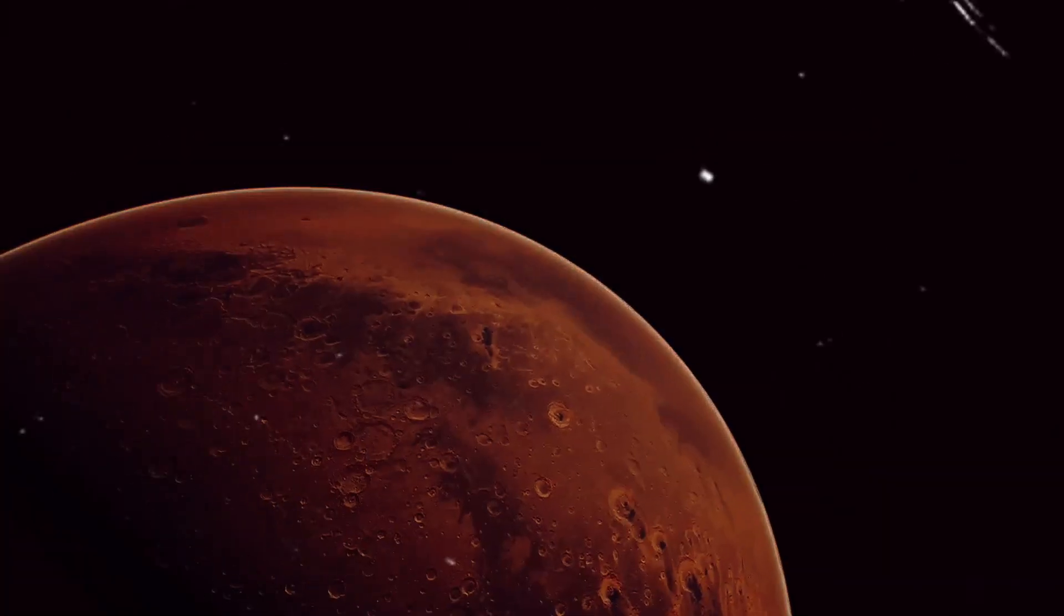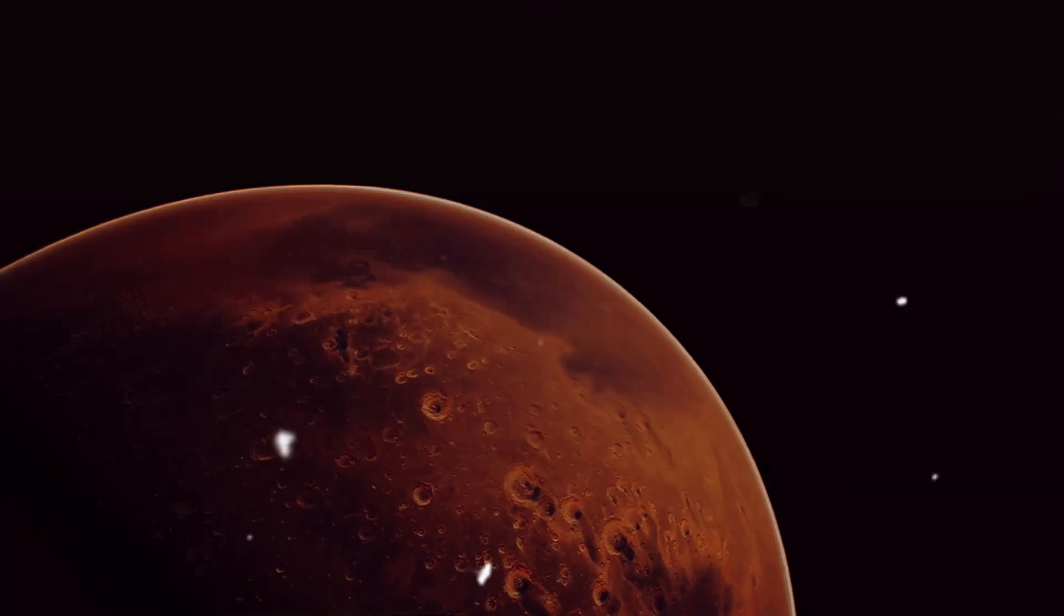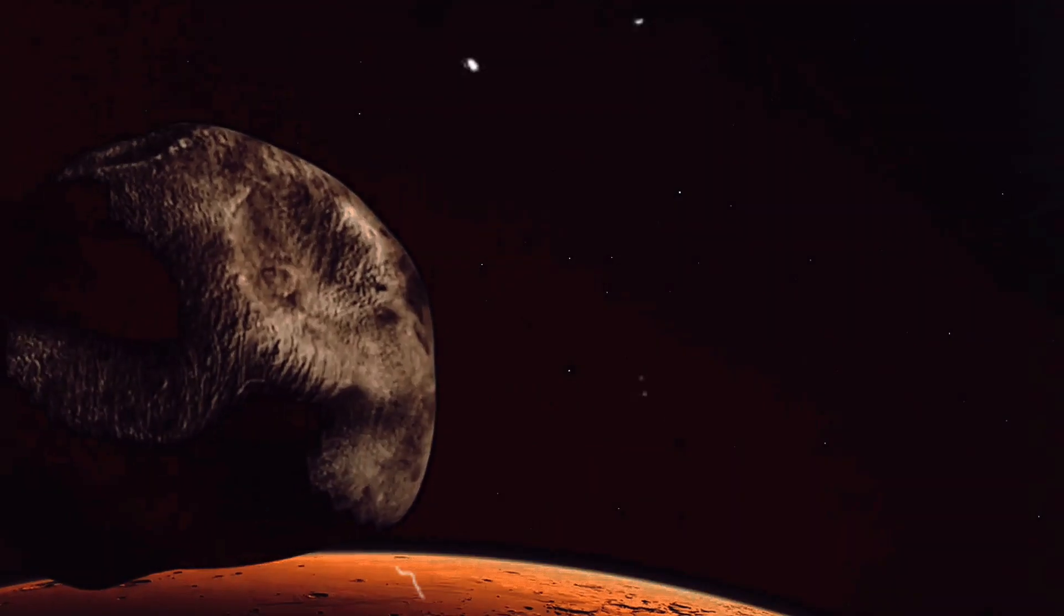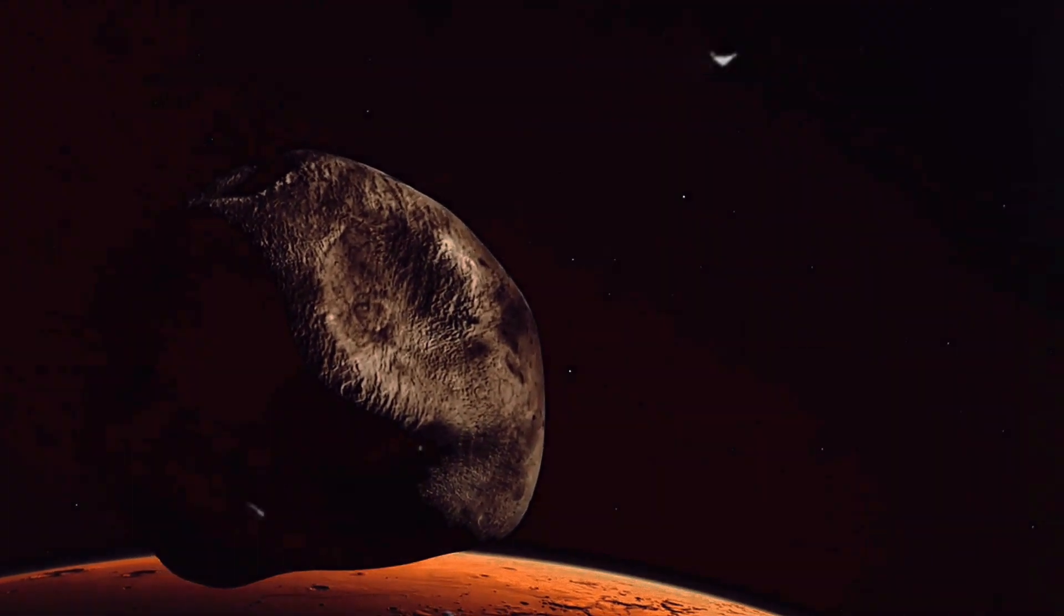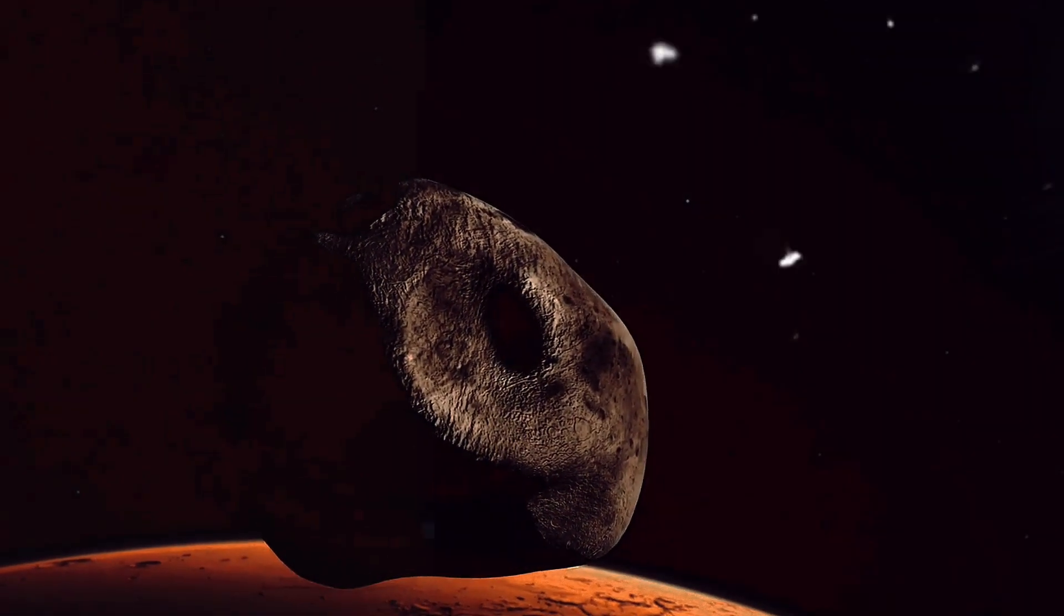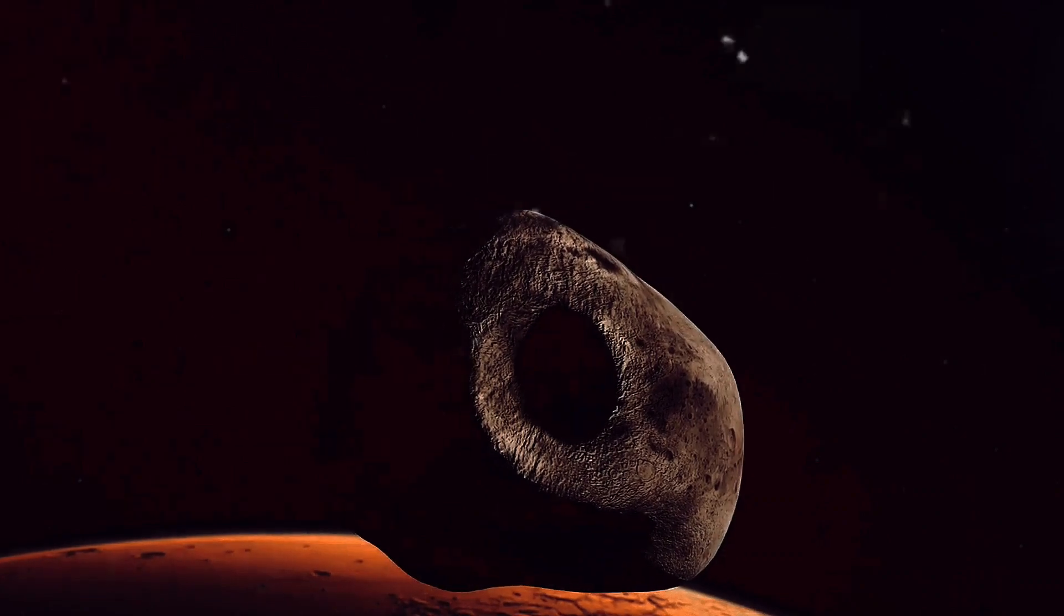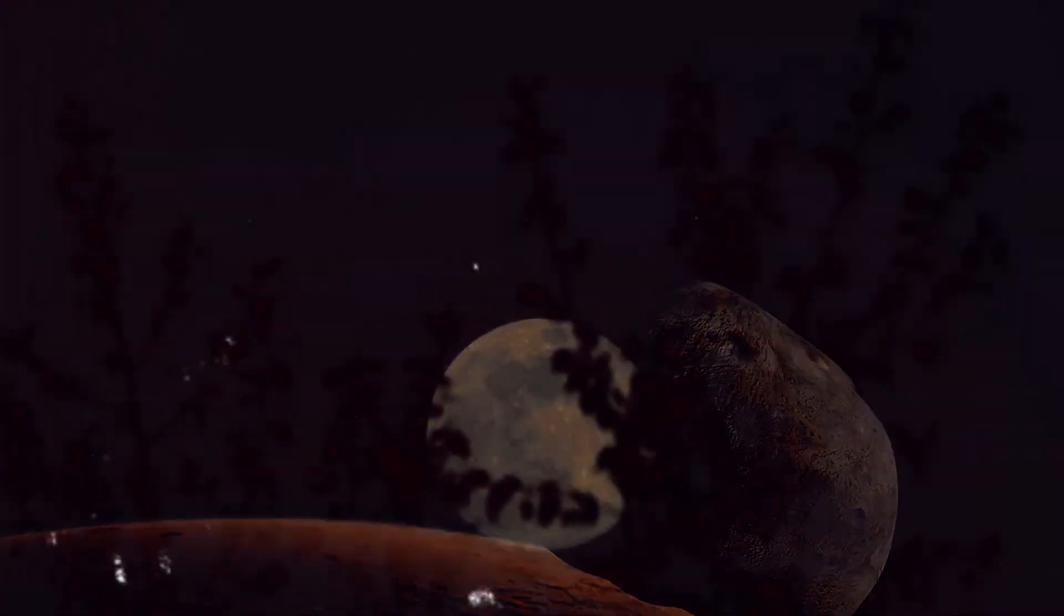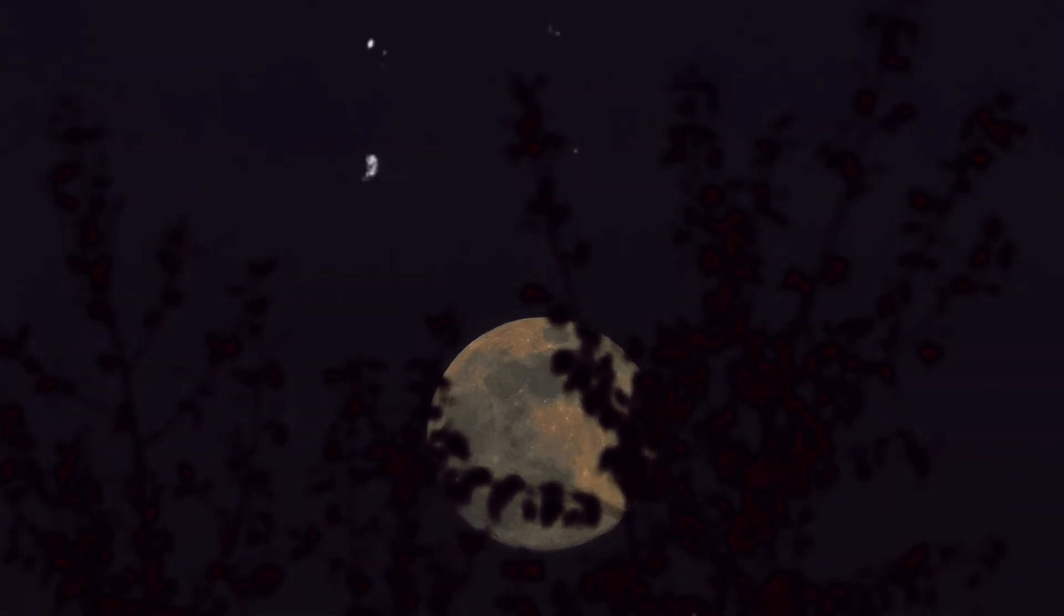the implications of Earth being in Mars' orbit extend beyond our planet. Time, as we understand it, is a construct based on our current position in the solar system. If that changes, everything changes. And it's not just about us, the inhabitants of Earth. Let's consider our moon. The moon has a significant impact on Earth. But what would happen to it if Earth was in Mars' orbit?